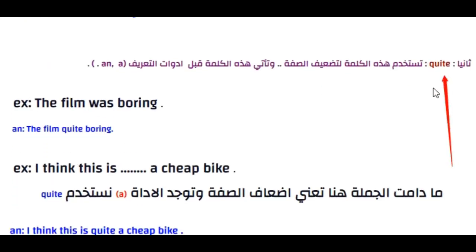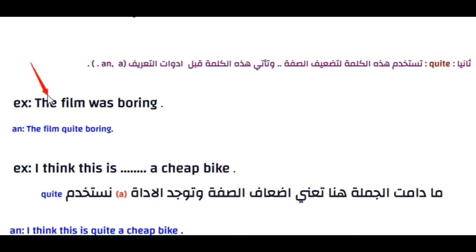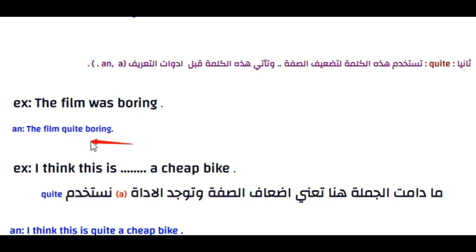ثانياً من الموضوع الثاني: quite. تُستخدم هذه الكلمة لتضعيف الصفة، وتأتي قبل أداة التعريف. مثال: The film was boring. الفيلم ممل — صفة سلبية — فنضعّفها أكثر ونقول: The film was quite boring.